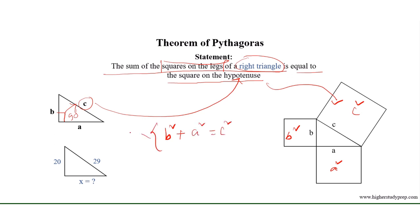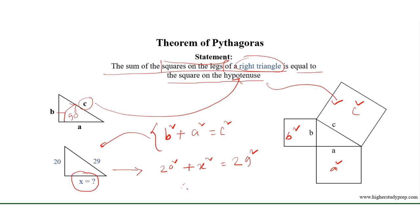This helps us determine the unknown value of x by applying the Pythagorean theorem. From this figure, 20 squared plus x squared equals 29 squared, which results in x equals 21.